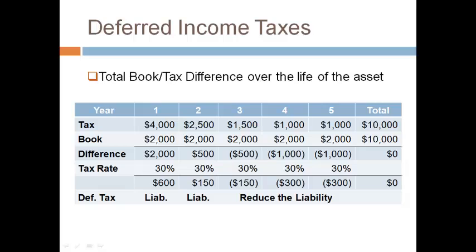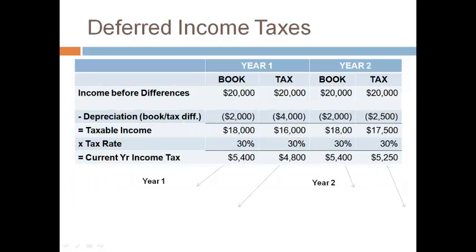A deferred tax liability does not become a deferred tax asset when the situation reverses. The deferred tax liability is reduced until it reaches zero at the end of five years. Let's look at the first two years to see how the difference in book and tax depreciation impacts how taxes are recorded.